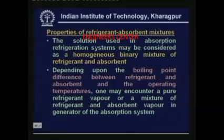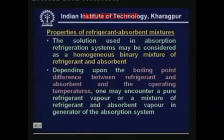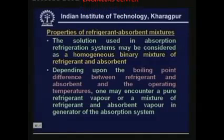Depending upon the boiling point difference between the refrigerant and absorbent and the operating temperatures, one may encounter a pure refrigerant vapor or a mixture of refrigerant and absorbent vapor in the generator of the absorption system. While describing the simple vapor absorption system, in the generator you supply heat at high temperature and refrigerant vapor is generated, which then goes to the condenser. But in actual systems, depending upon the boiling point temperature difference, in addition to the refrigerant vapor you may also have some vapor of the absorbent in the generator.